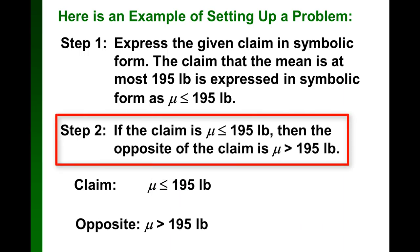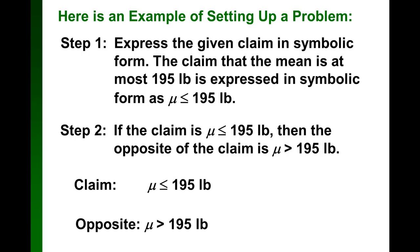Step two is to express the opposite of the claim. The opposite of the claim can easily be found by rewriting the same two symbols, namely μ and 195, and then selecting the inequality sign that has the opposite direction as the inequality sign in the claim.